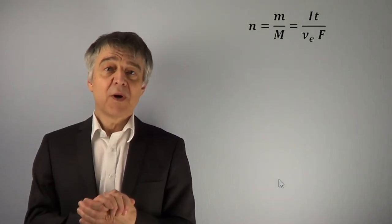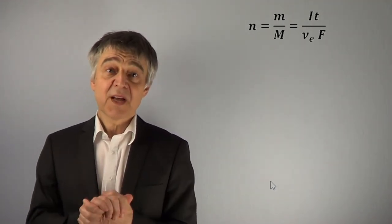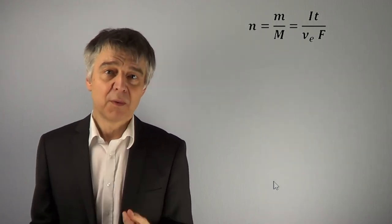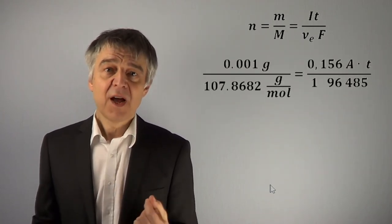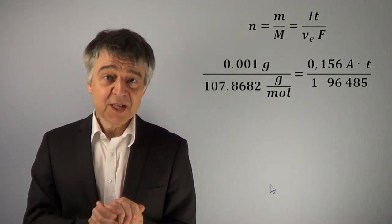0.001 g of silver divided by 107.8682 g per mole, the molar mass of silver. Current is equal to 0.156 Ampere,